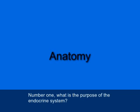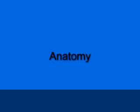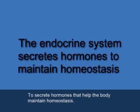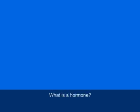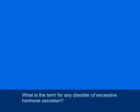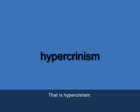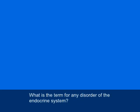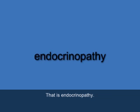Number 1: What is the purpose of the endocrine system? Number 2: To secrete hormones that help the body maintain homeostasis. What is a hormone? That's a chemical messenger that regulates the activities of organs, glands, and tissues. What is the term for any disorder of excessive hormone secretion? That's hypercrinism. What is the term for any disorder of the endocrine system? That's endocrinopathy.